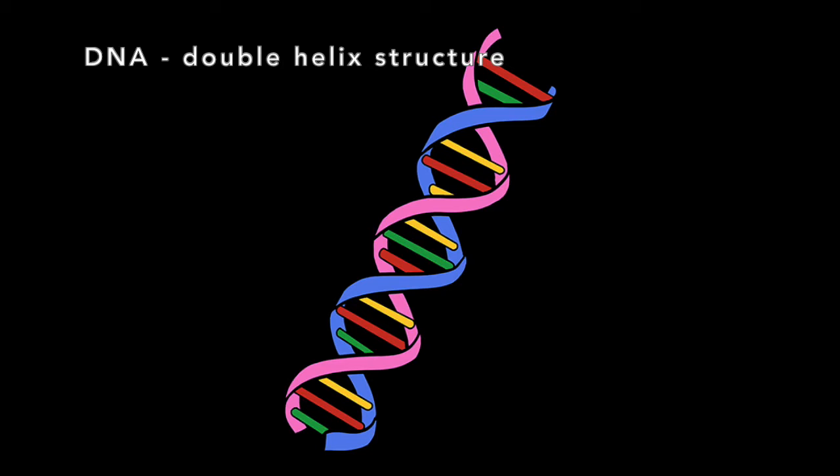DNA has a pretty unique molecular structure, and it's a shape that we like to call a double helix. What you're seeing in the picture right now is that double helix shape — it's like a ladder, and then as if you twisted that ladder, and you can see what the rungs are, and those are what we call nitrogenous bases. It's the unique pairing of those bases that makes up our genes.